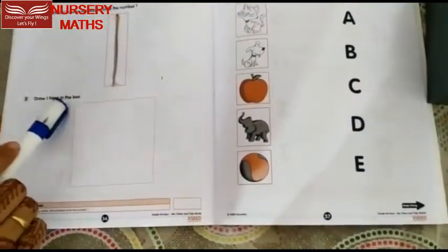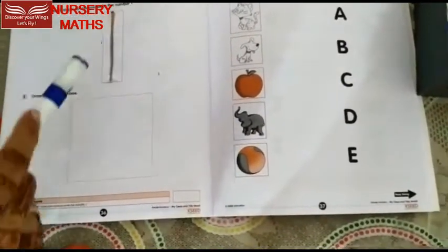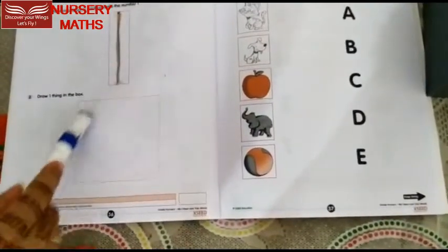Now, second question is: draw one thing in the box. Which number is this? Number 1. तो, हमको one thing ही ड्रा करना है, इस box के अंदर. Understood.